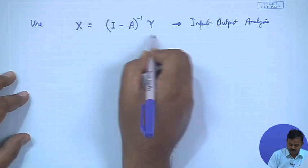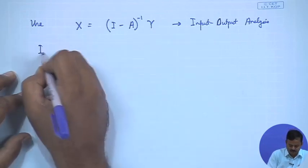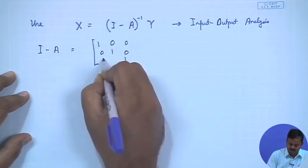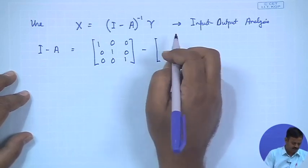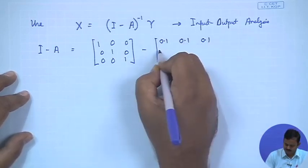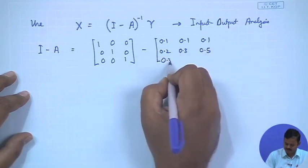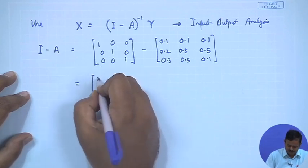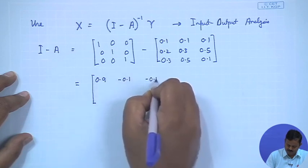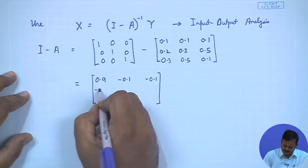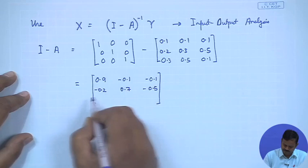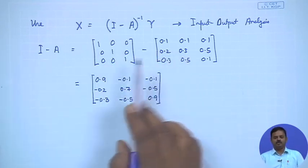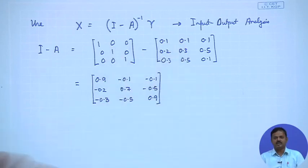Using this: y is known as 200, 100, 100. We need to compute I minus A. The identity matrix I is the standard 3×3 identity, so I minus A turns out to be: row 1 — 0.9, −0.1, −0.1; row 2 — −0.2, 0.7, −0.5; row 3 — −0.3, −0.5, 0.9. We know how to do matrix addition and subtraction — each element is computed correspondingly, for example 1 minus 0.1 gives 0.9, and 0 minus 0.1 gives −0.1. This is how we get I minus A.